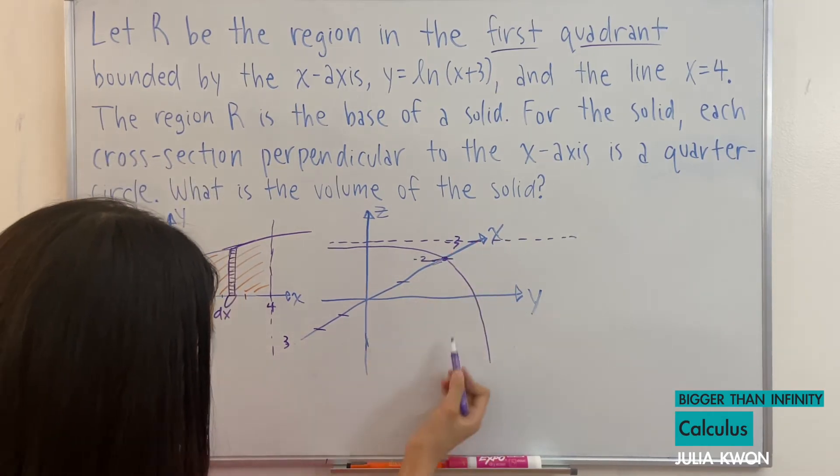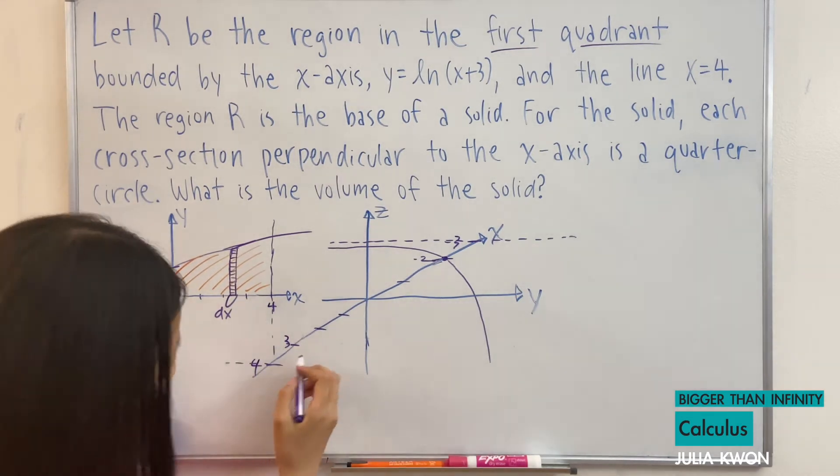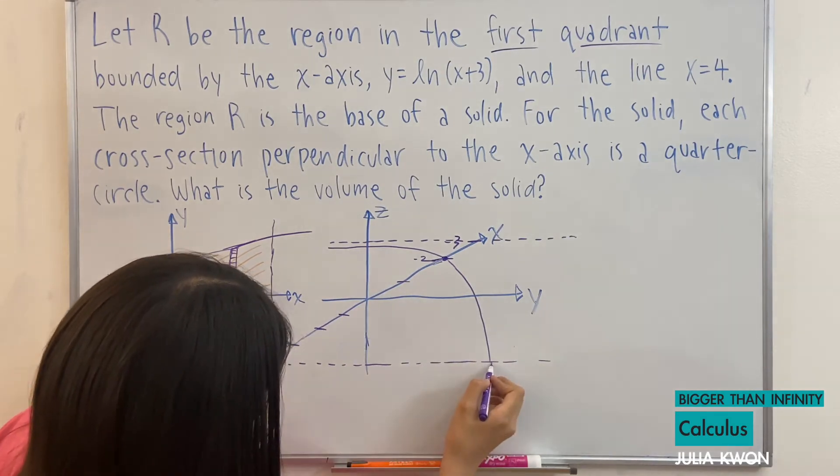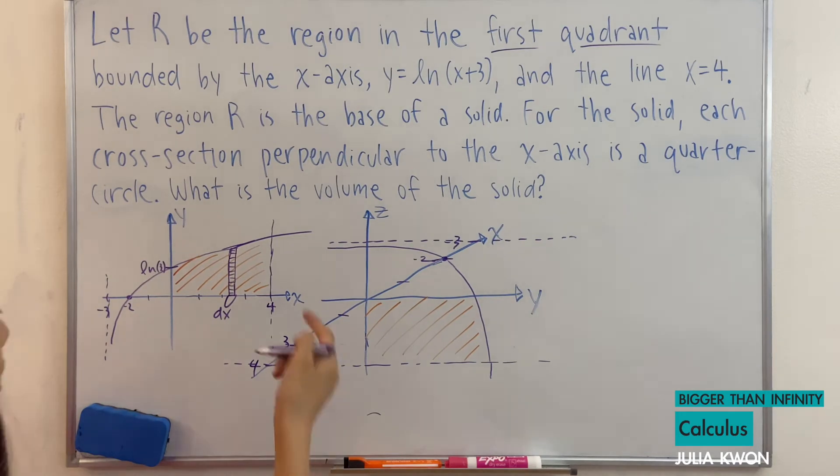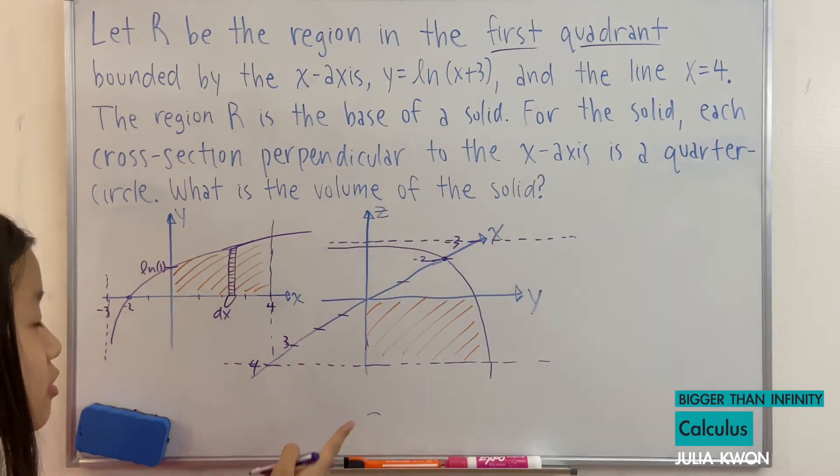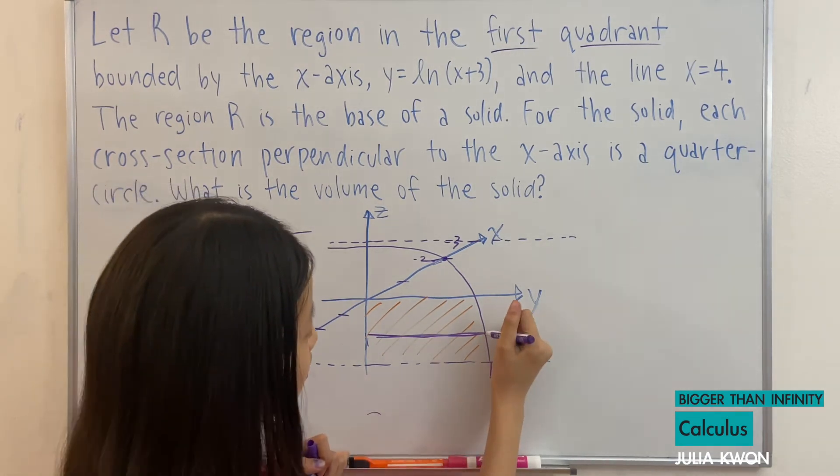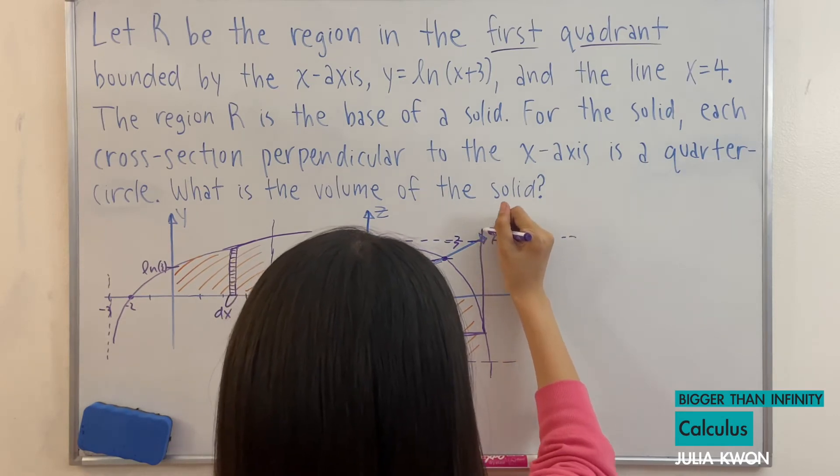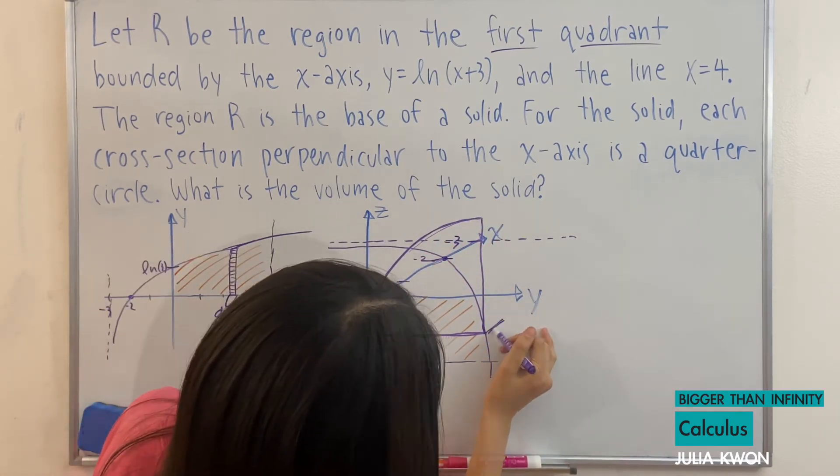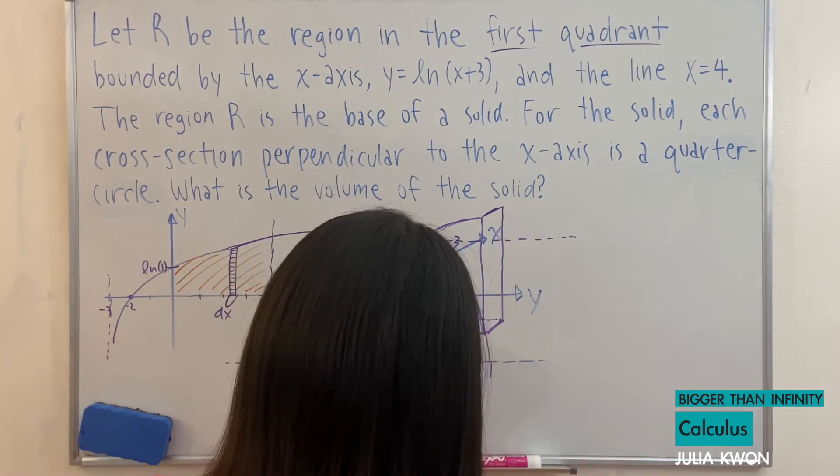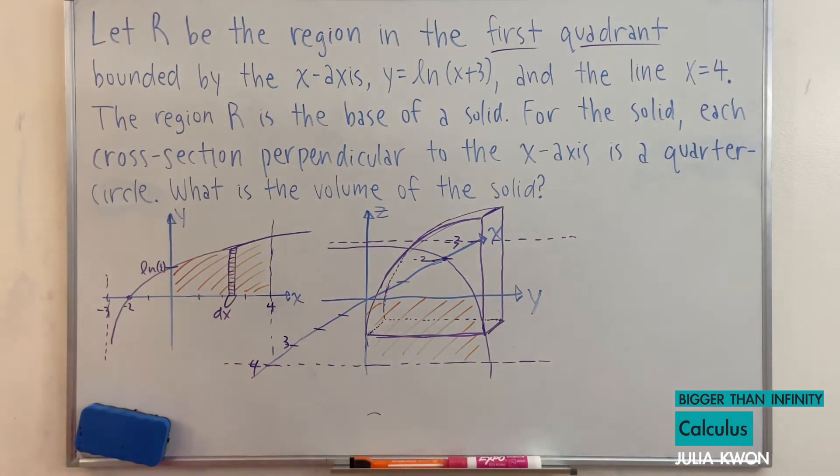And this is the first quadrant. And the line x = 4 would be this one. And so this is the part that we shaded in when we drew it in 2D. And since it's parallel to the y-axis and perpendicular to the x-axis, this would be our cross-section. And if we draw our quarter circle, it will look like this. Okay, so this would be our quarter circle.